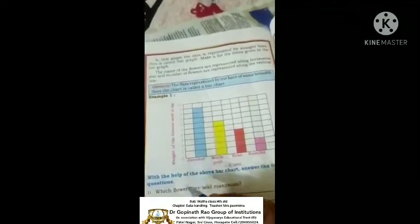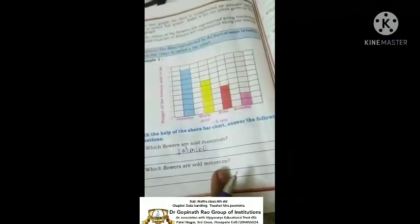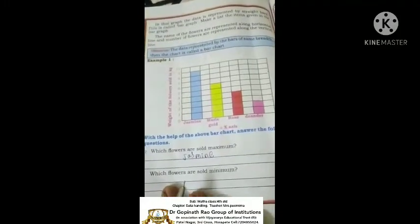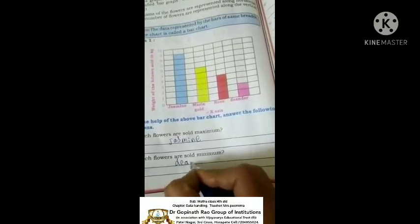Here, which is sold jasmine? We have to write jasmine. Then which flower is sold minimum? That is dinder.